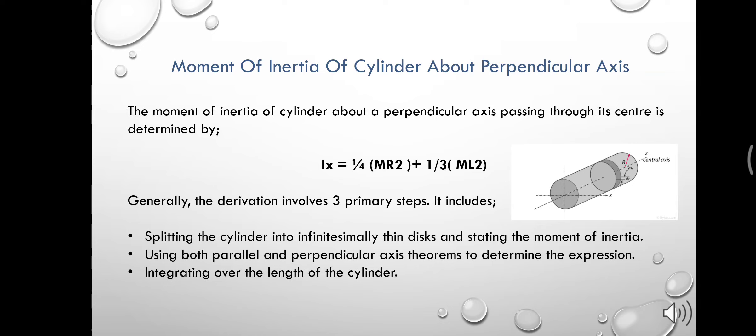Generally, the derivation involves three primary steps. They are: splitting the cylinder into infinitesimally thin disks and stating the moment of inertia; using both parallel and perpendicular axis theorems to determine the expression; and integrating over the length of the cylinder.